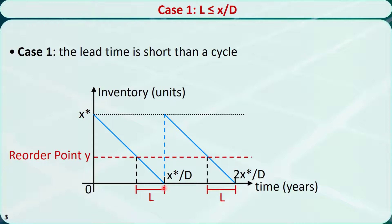We must order at this point so that after the lead time, the products will arrive exactly when the inventory is reduced to 0. In this case, we have two similar triangles, this small one and this large one. Because the lengths of corresponding sides are proportional, the ratio of this side to this side, that is, y to x star, must be equal to the ratio of this side to this side, that is, L to x star over D. This equation leads to this result.